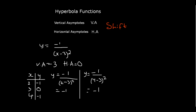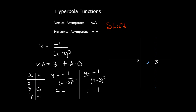With x squared in the denominator, the y-values on both sides are the same — both are negative one. VA = 3 and HA = 0. Where x = 2, y = -1, and where x = 4, y = -1. Both points are below the x-axis on either side of VA = 3. Our graph goes like this — both branches curve downward from the vertical asymptote.